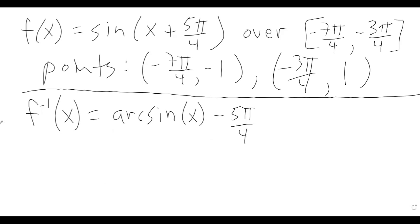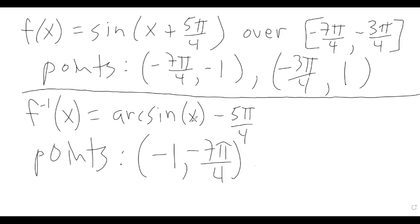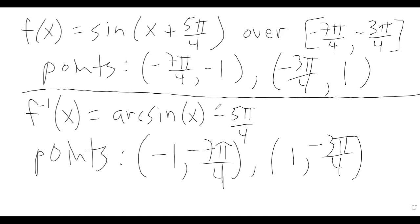The original graph had two points, the beginning and the end. The inverse graph also has two points, a beginning and an end. Look — compare these inverse points to the original points. Notice how I got them: I switched x and y. That's all you've got to do — switch x and y. And that's appropriate because that's how we came up with the inverse equation. Before we write down our final answers, let's go to Desmos to confirm that all of this works.